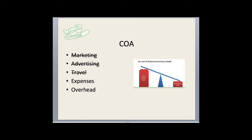Travel is another cost we don't pay a lot of attention to. When somebody says 'come see us,' we just go — drive or fly — without considering whether the travel cost is greater than the commission or revenue we'll get from working with that person. Travel can be a very big expense. Then you've got regular overhead: staff, rent, and all sorts of things that are lumped together in expenses.